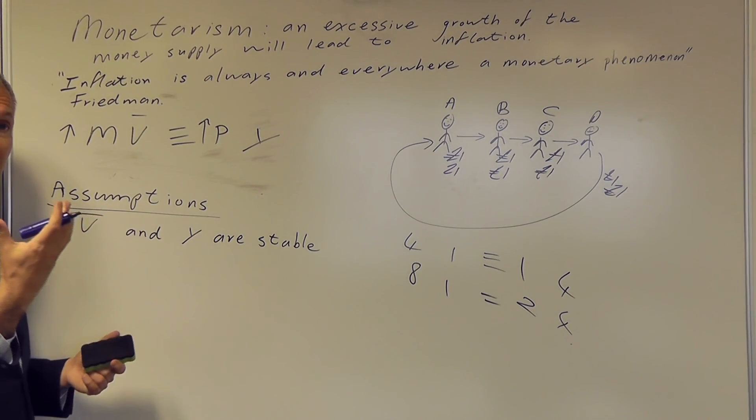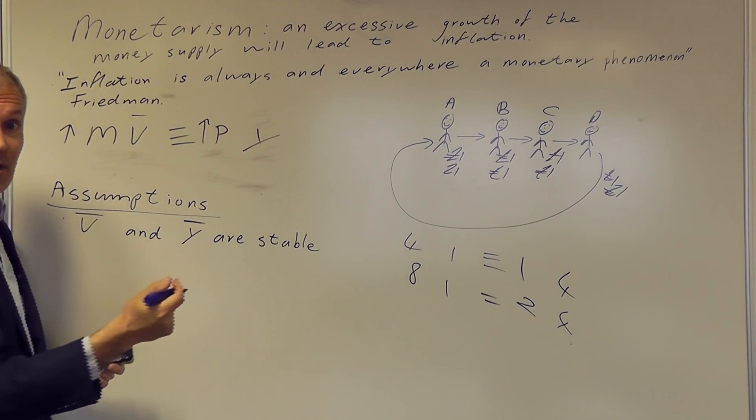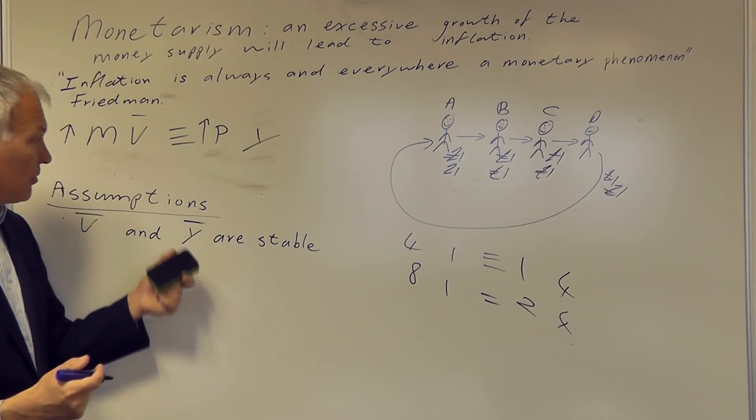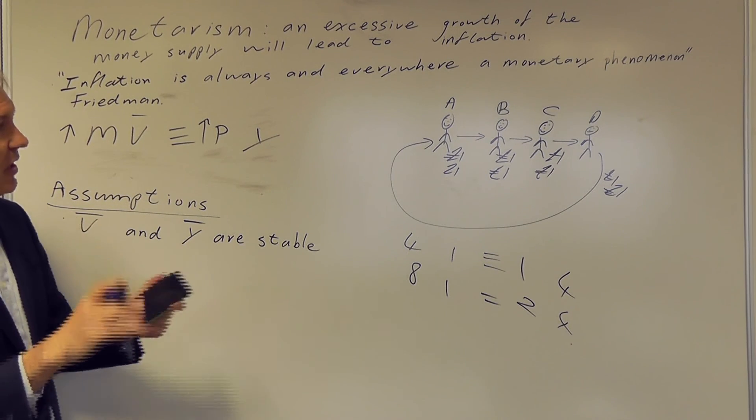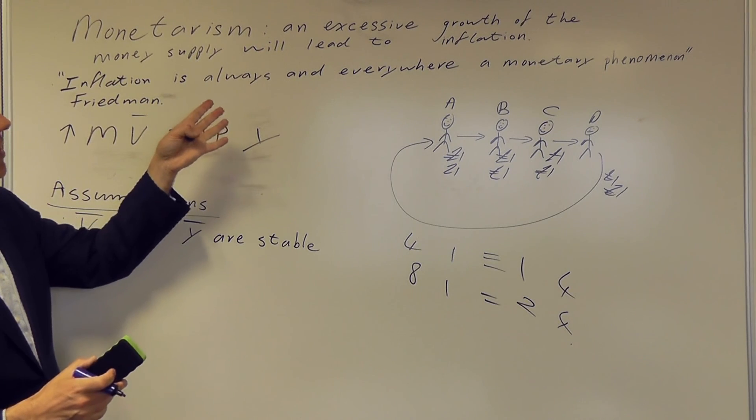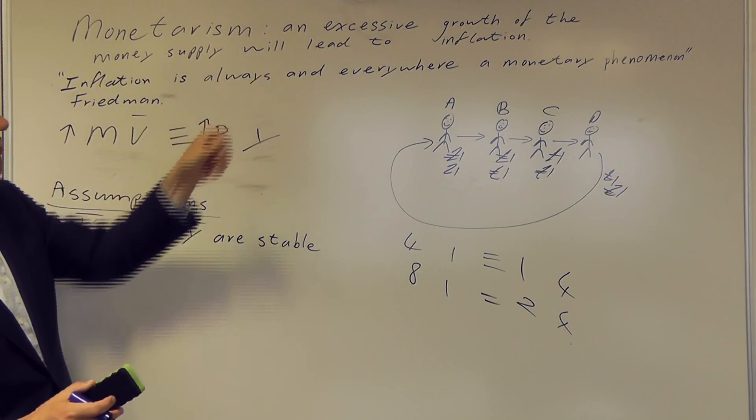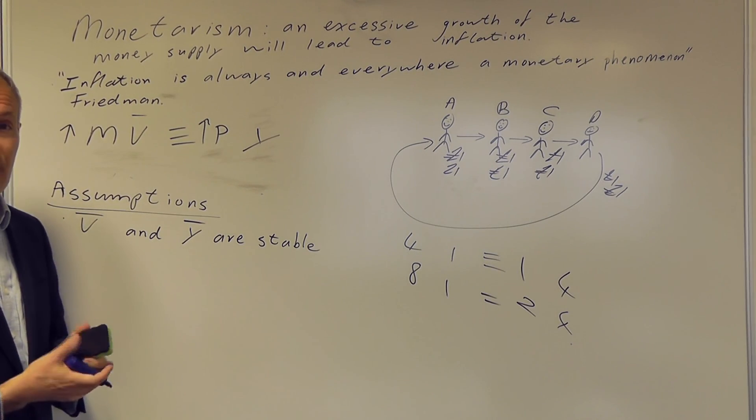Is V really stable over time? And certainly is Y, or T in the previous equation, stable over time? And I think a lot of people would question those assumptions. So the key thing is, monetarism is the idea that inflation is always caused by an excessive growth of the money supply, as illustrated by the Fisher equation.